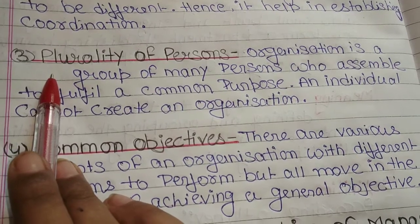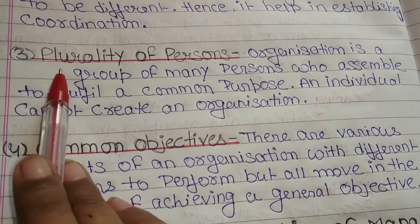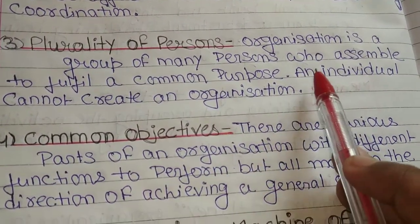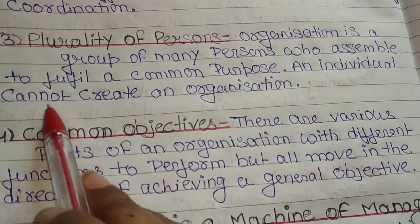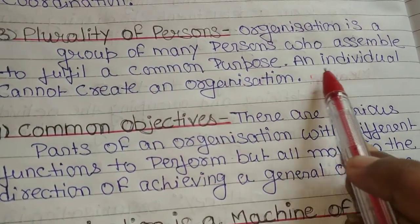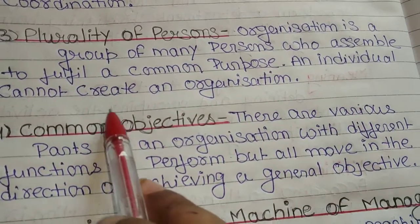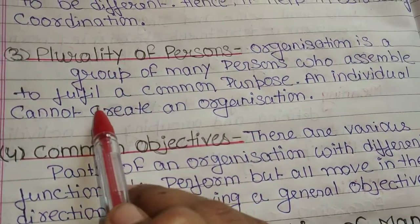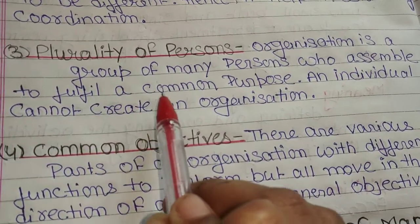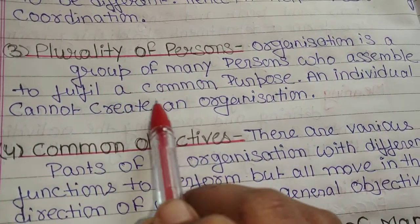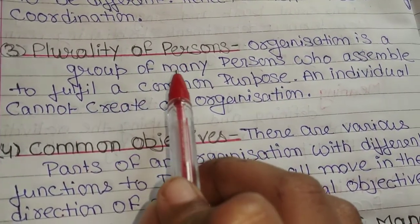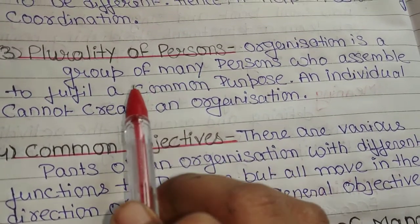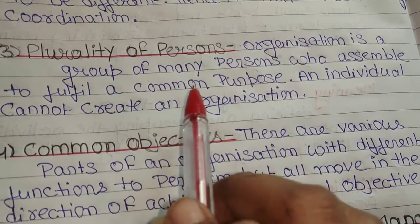The third point is plurality of persons. Organizing is a group of many persons who assemble to fulfill a common purpose. An individual cannot create an organization. It has been told that any individual person alone cannot do all the work of the whole organization, so many people are needed.